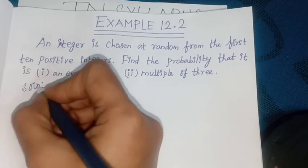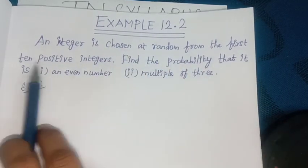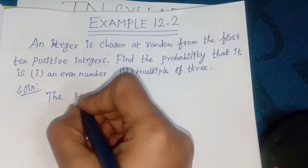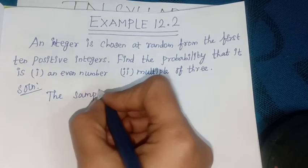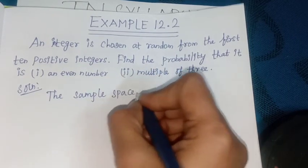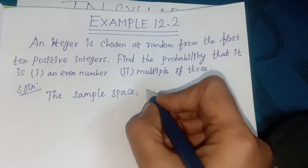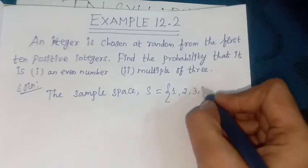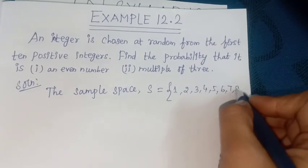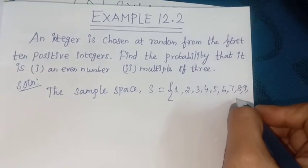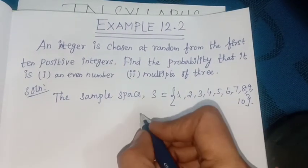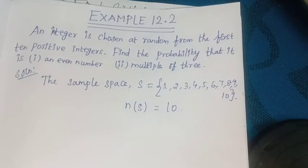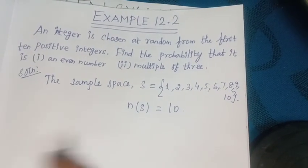So first 10 positive integers - this is the sample space. The sample space S equals the set {1, 2, 3, 4, 5, 6, 7, 8, 9, 10}. So n(S) equals 10.